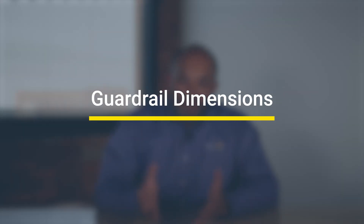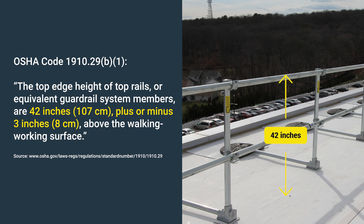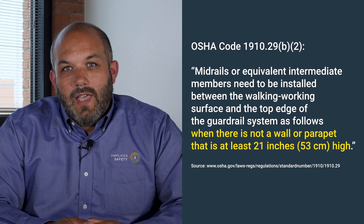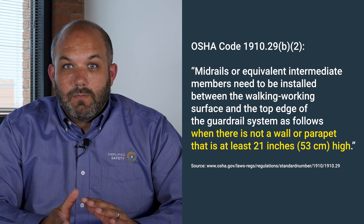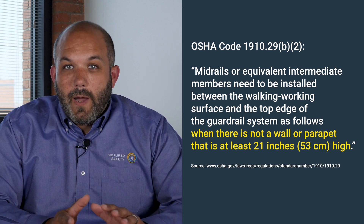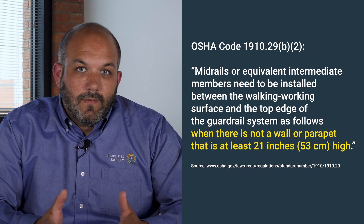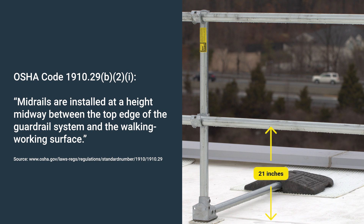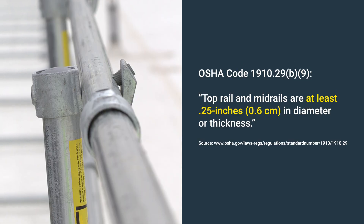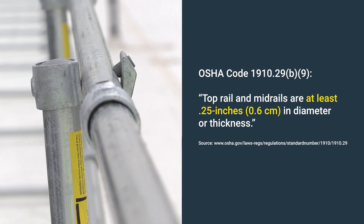Now let's talk about your guardrail dimensions. Your top rail needs to be at least 42 inches above your walking working surface, plus or minus three inches, giving you a range of 39 to 45 inches in height. If you don't have a small structural wall or parapet that's at least 21 inches next to your guardrail, then you need to have a midrail. That midrail needs to be midway between the top rail and the walking working surface — typically that's 21 inches.